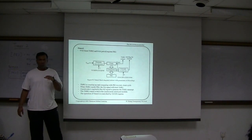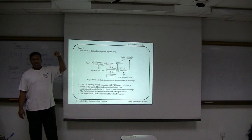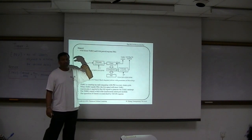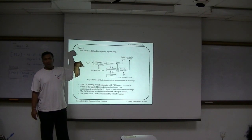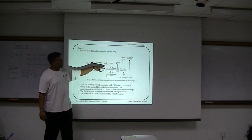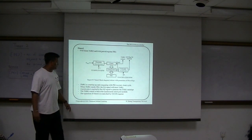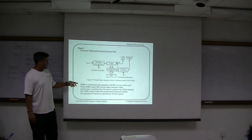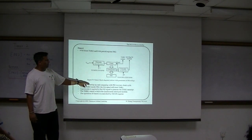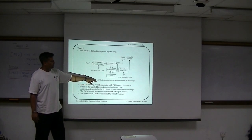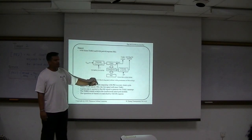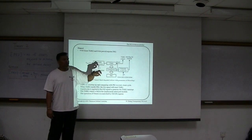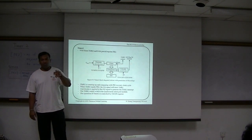Timer 2 will start to count from 0 until it goes to the maximum high. When it reaches FF, it will actually overflow. The overflow will actually give some output. Timer 2 is counting up and comparing with PR2 in every clock cycle. Inside PR2 is where you have to load the number of counts.